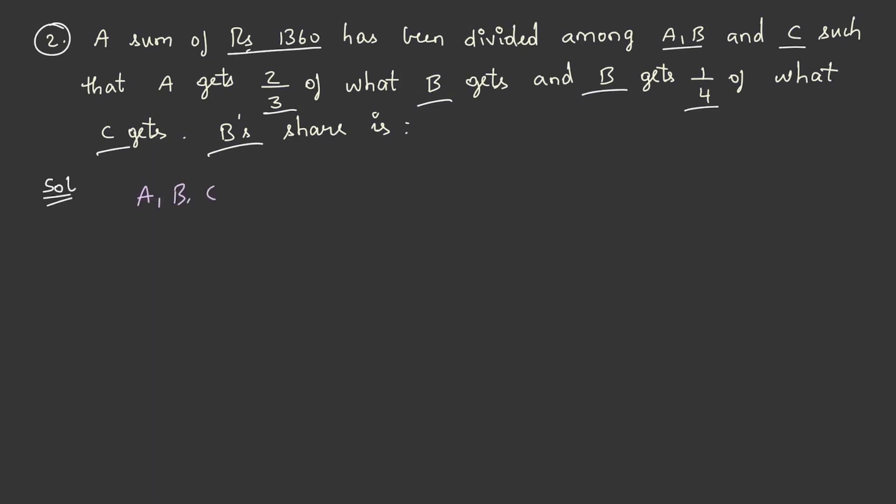A, B and C are linked to each other, so if you assume the value of C we can get A and B as well. So let's take the value of C as x. Now B share will be x by 4 and A share will be 2 by 3 times of B.